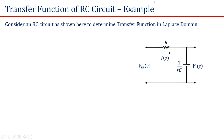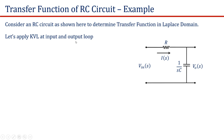Now let us consider an RC low-pass filter circuit as shown in this figure and try to determine its transfer function using the Laplace transform. Here in this circuit, V_in(s) is the input voltage expressed in the Laplace domain, R is the resistance and C is the capacitance whose Laplace transform impedance is given as 1/(sC), and the current flowing through this loop is I(s). Now let us apply KVL in the input loop and output loop. According to KVL, we get V_in(s) is equal to R·I(s) plus (1/sC)·I(s).